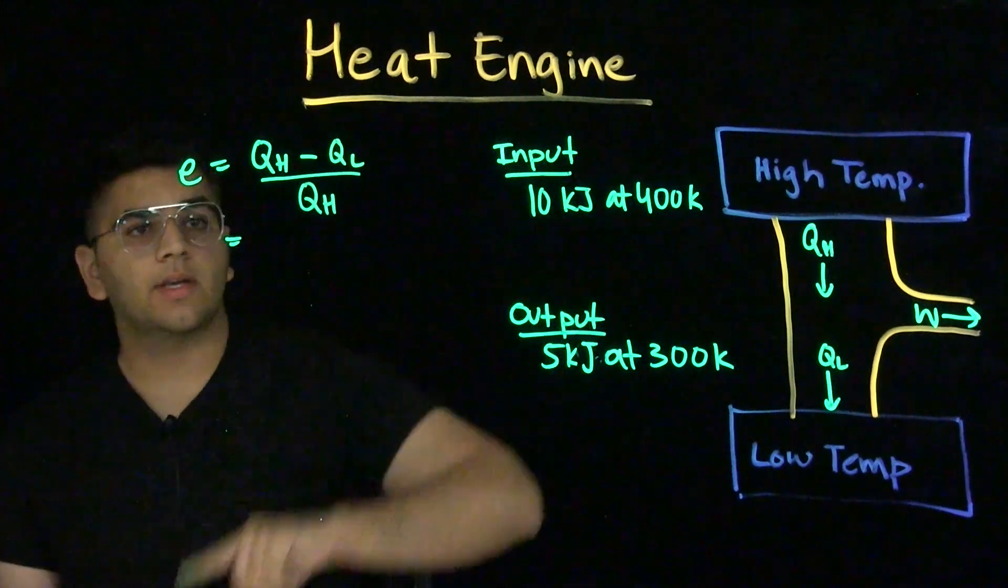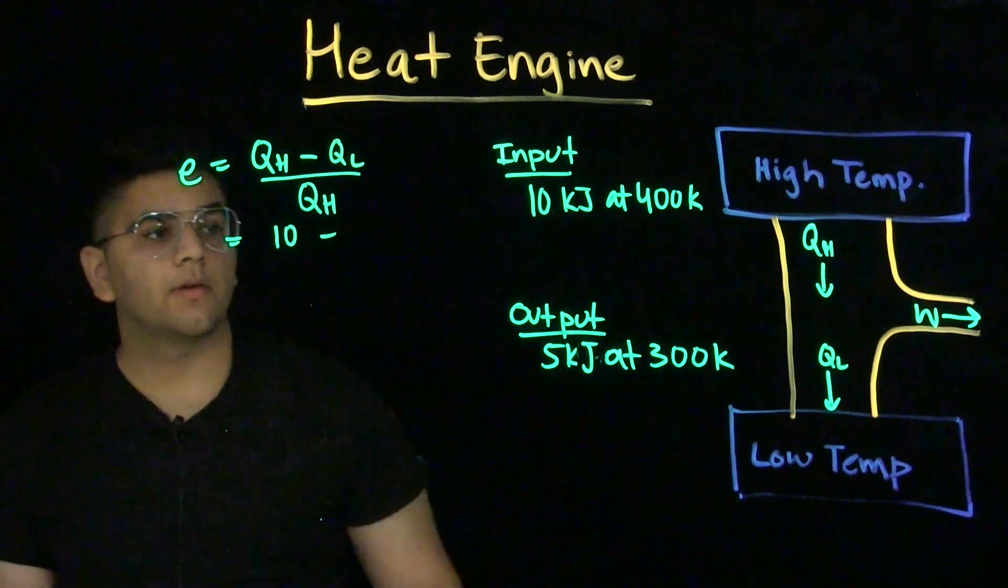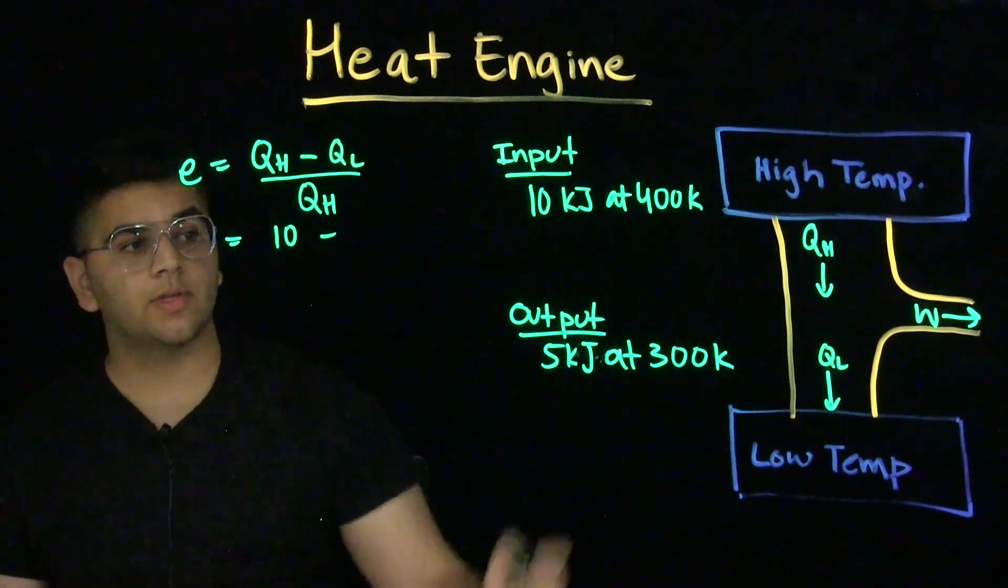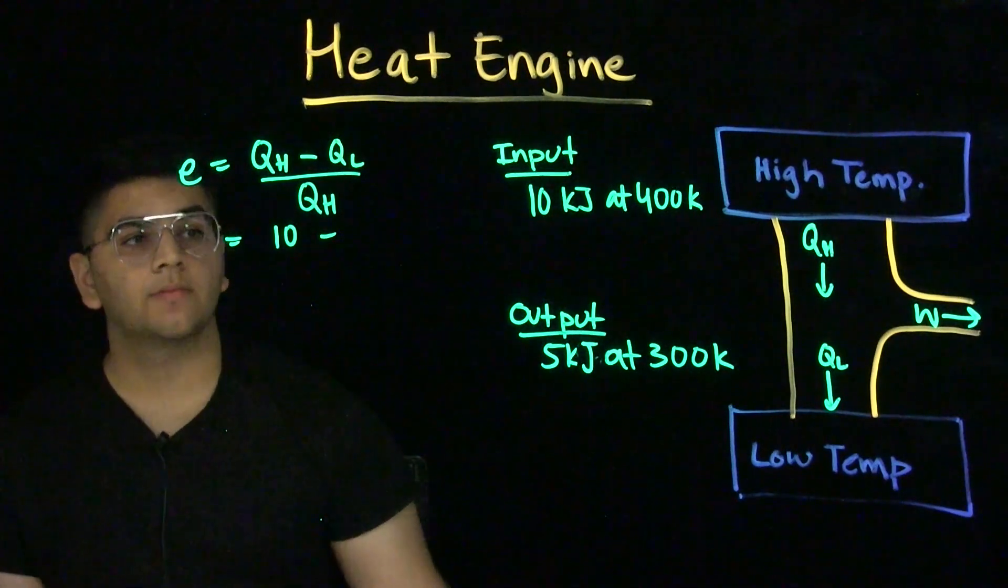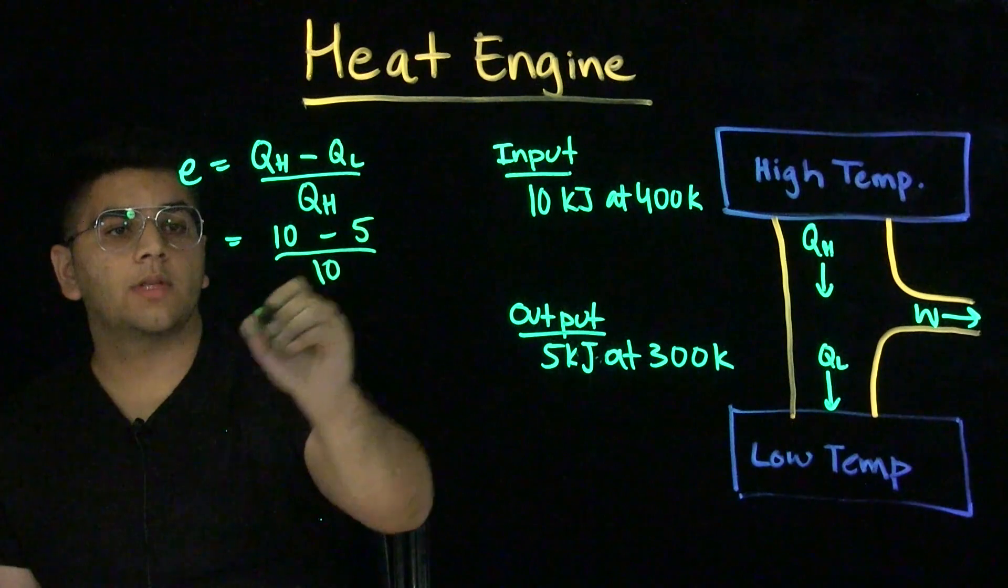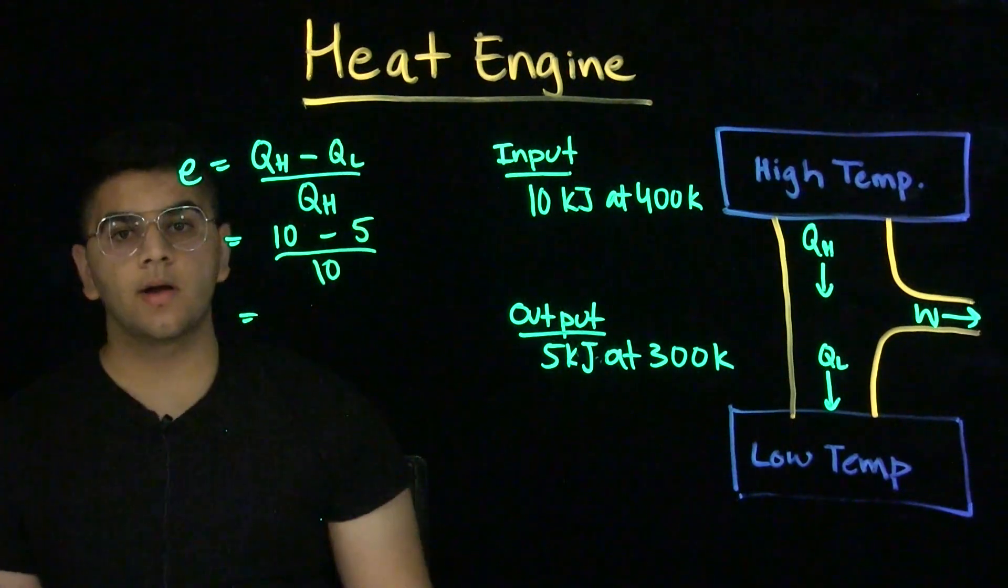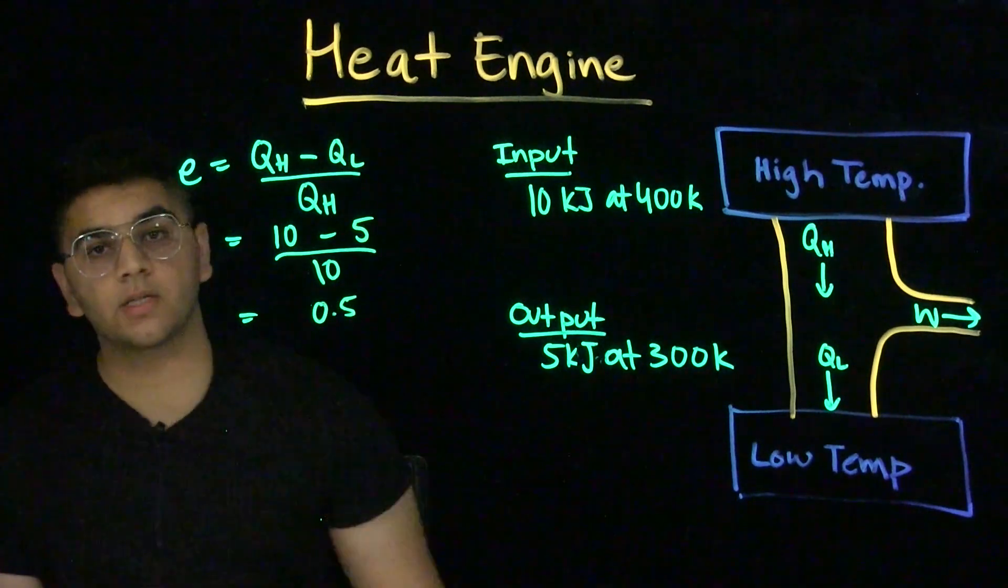the high energy is 10 kilojoules, minus the output that we get on the other side will be of 5 kilojoules. So, this is the energy that is going into our low temperature environment over the high temperature environment energy. This gives us an efficiency of 50%, or 0.5 decimal.